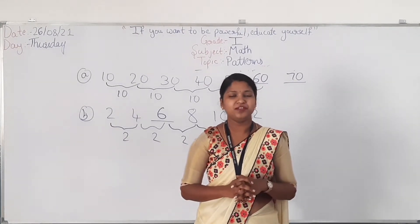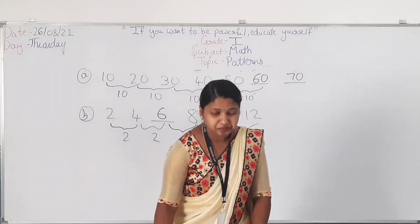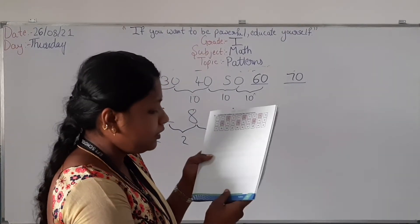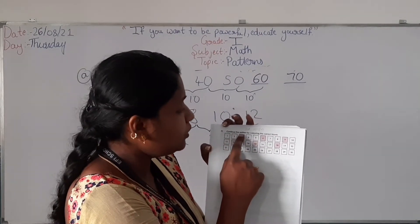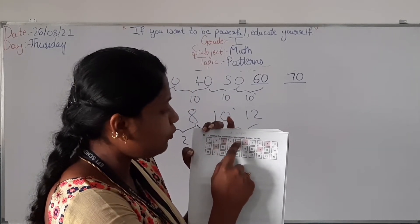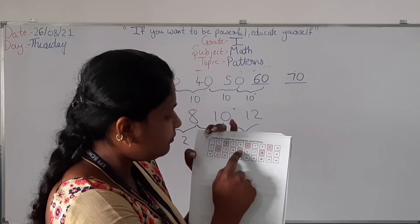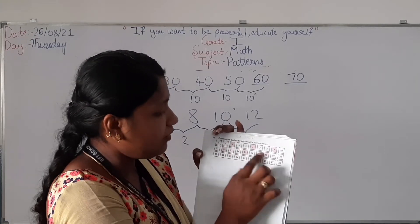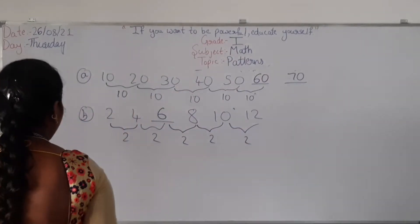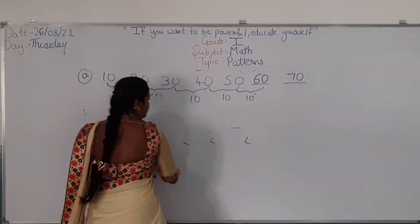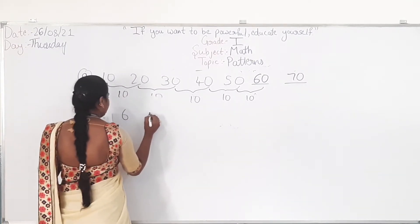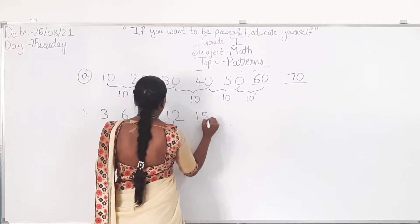You will have homework today. Please take your mathematics textbook part 1 and open page number 21. See question number 3: Continue the pattern by colouring the boxes. They have written numbers from 1 to 30 and coloured only a few boxes. The coloured numbers are 3, 6, 9, 12, 15, 18. Can you continue this pattern?